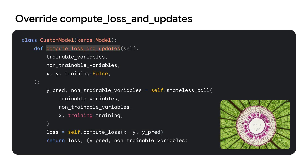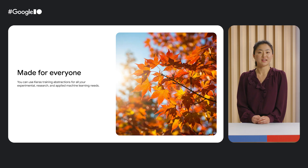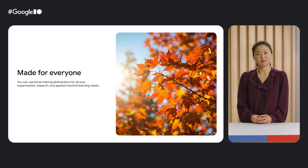And lastly, for ultimate control, you can override the core training steps. You can create custom losses and tailor the entire training loop. This example demonstrates overriding the compute_loss and updates method, which is then automatically called by Model.fit. Our training abstractions are designed for everyone. You can use them for all your experimental research and applied machine learning needs.